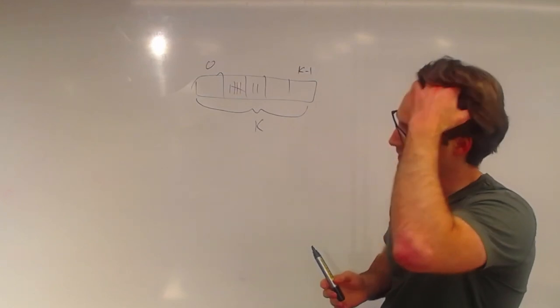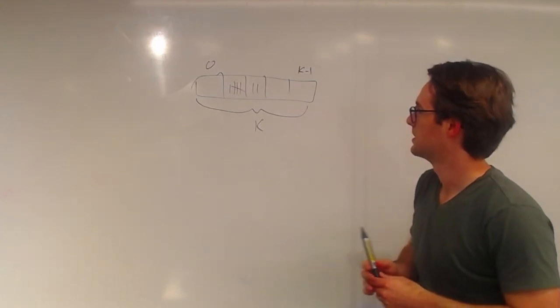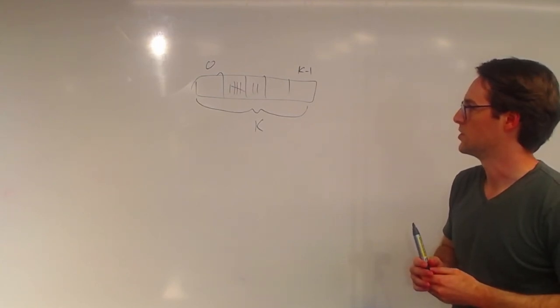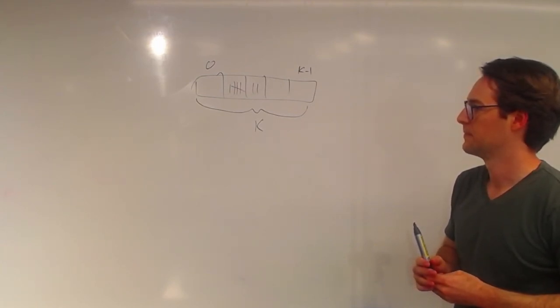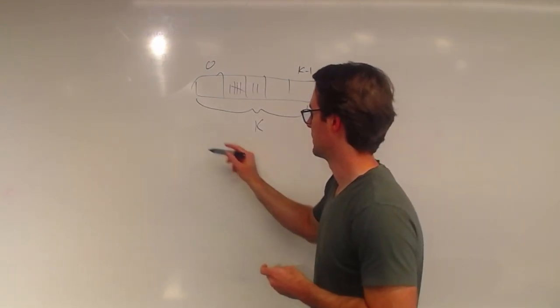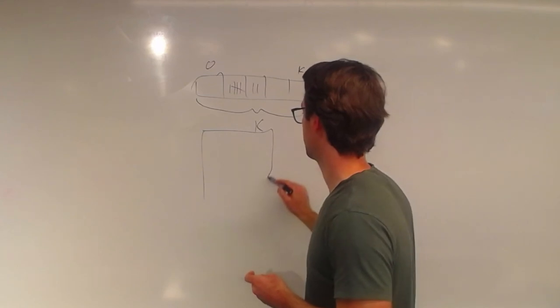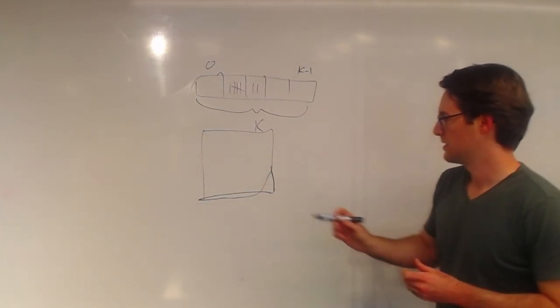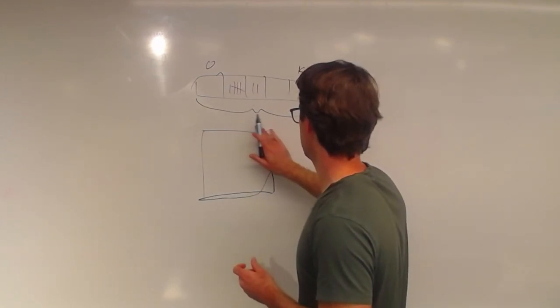So what you can do is you can observe that these numbers could go into a matrix where the rows and columns kind of represent... So it's a k by k matrix.